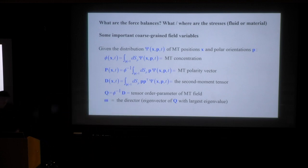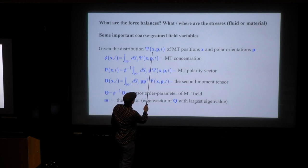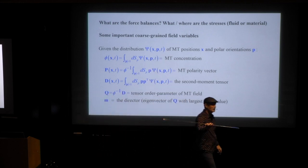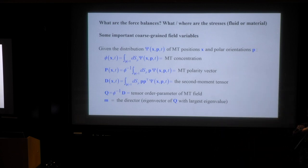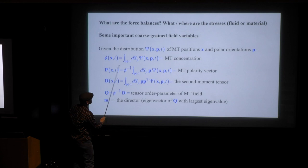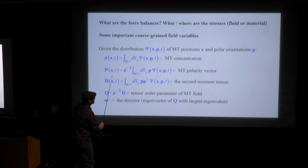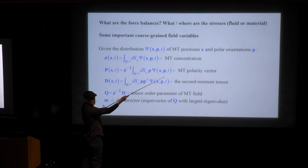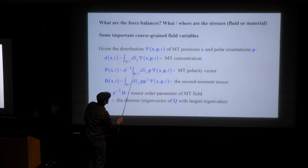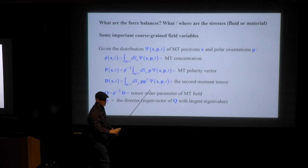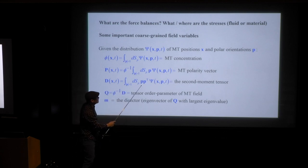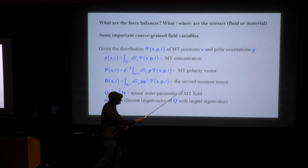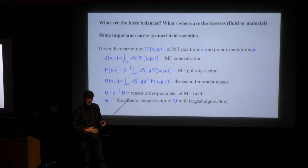Given this distribution function, I can take various moments. Averaging over orientations gives the concentration. The first moment in orientation gives what's called the polarity — P being the direction vector of a single microtubule. Taking the second moment tensor PP-transpose against the distribution function gives something called the active stress, which arises naturally as the stress tensor element. If I normalize this so-called D tensor by the concentration, I get a classical tensor order parameter for the liquid crystalline director field. This liquid crystal physics arises naturally in these systems.